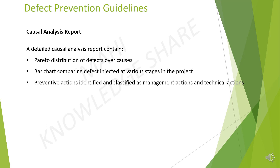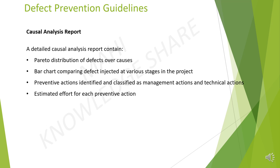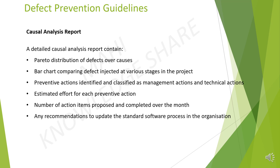Preventive actions identified and classified as management actions and technical actions. By segregating the actions between the two, we can plan for allocation of resources from each department later. Estimated effort for each preventive action — we should provide the estimated report so that all the stakeholders will be aware of the resources required during this activity. Provide the number of action items proposed and completed over the month in the causal analysis report. And lastly, provide details on any recommendations to update the standard software process in the organization.